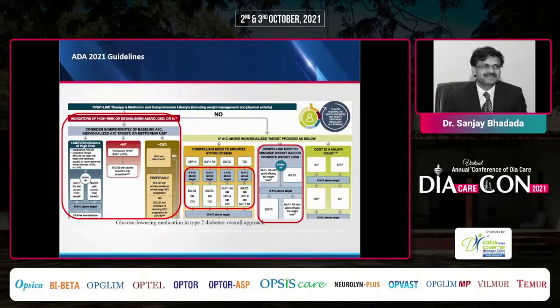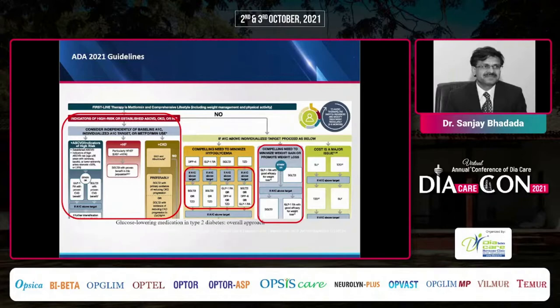A lot of literature has been generated on why fracture risk is increased in diabetes, but my topic today is to discuss what is the effect of various drugs used for management of type 2 diabetes and how they can affect bone health. Per the ADA 2021 guideline, various drugs are used — starting from metformin to GLP-1 receptor agonists, SGLT2 inhibitors, DPP4 inhibitors, thiazolidinediones, sulfonylureas, etc.